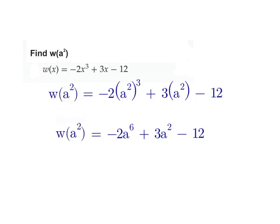So that's really my final answer. w of a² equals -2a⁶ + 3a² - 12.